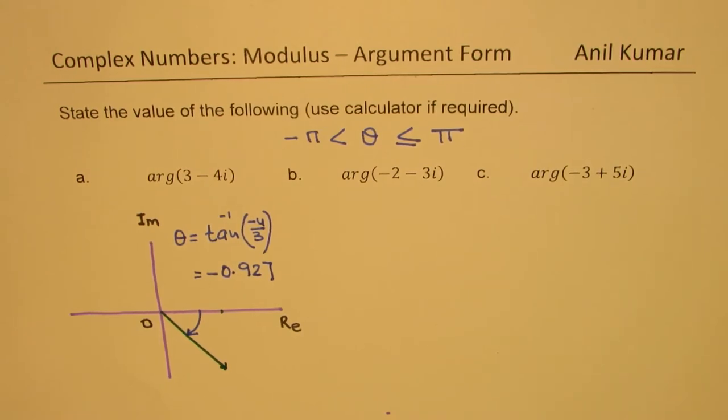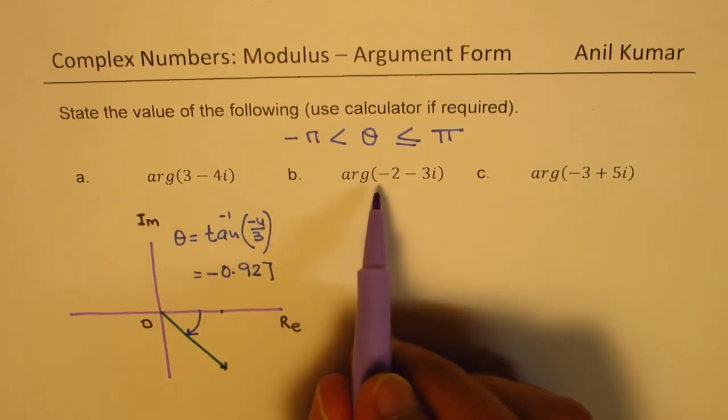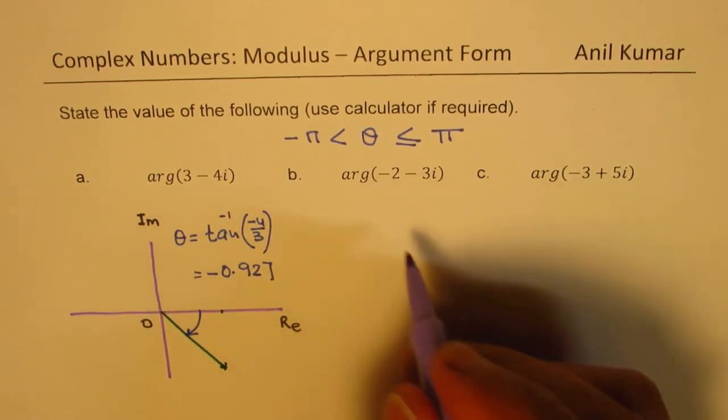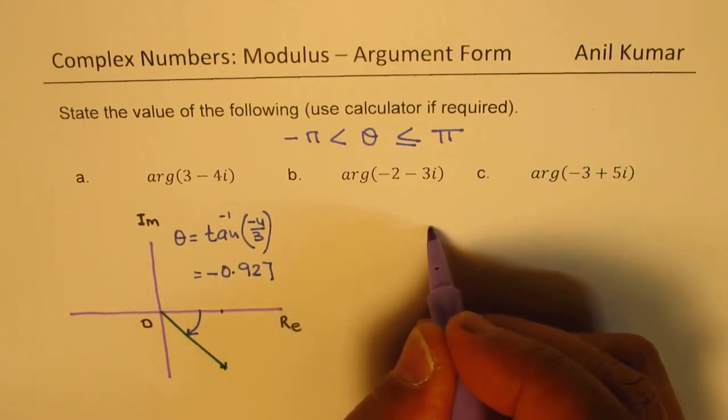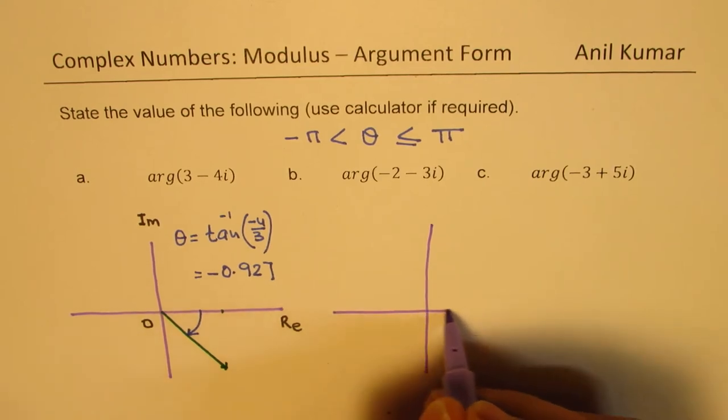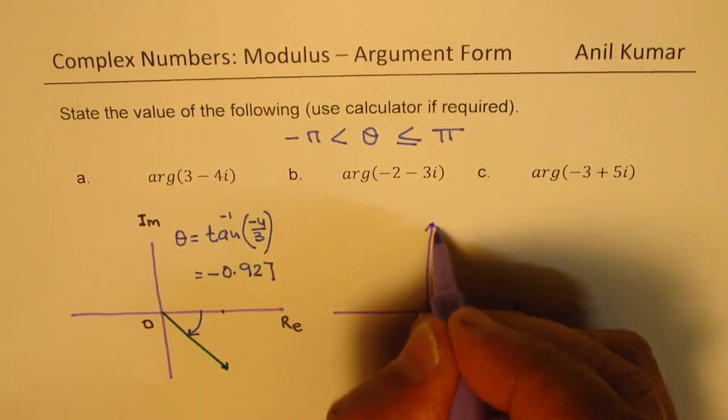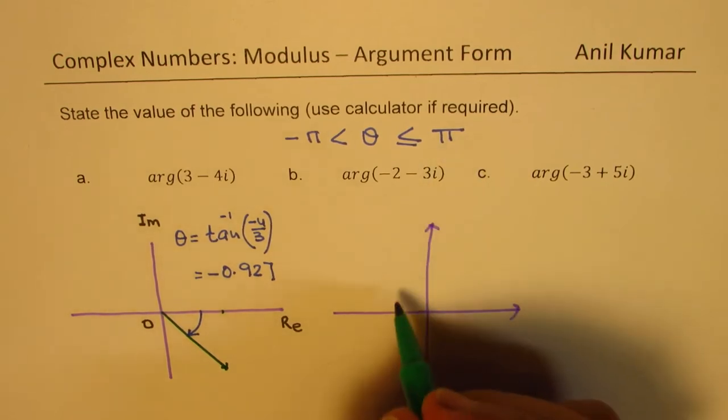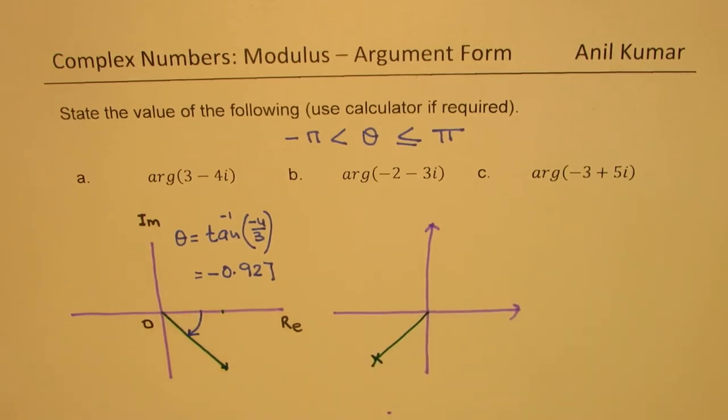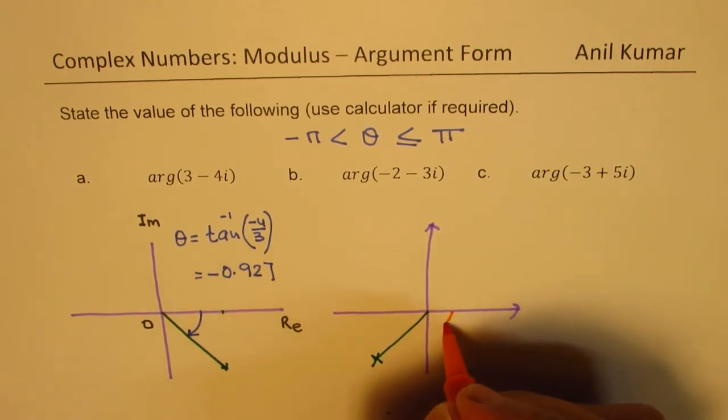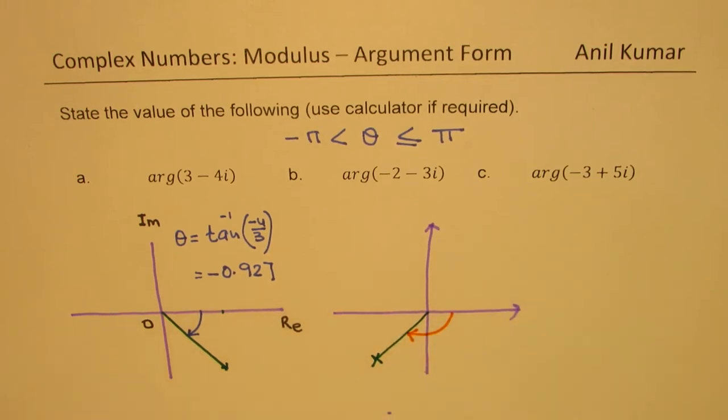Now the next one here is argument minus 2 minus 3i. So let's also sketch this one. So minus 2 minus 3i we are looking for that side. So in this case minus 2 and minus 3i means somewhere here. Now as you can see, the solution should be something like this. We are looking for that angle. So θ is this angle.